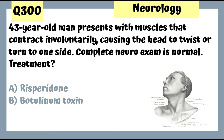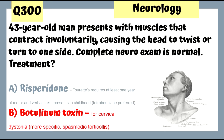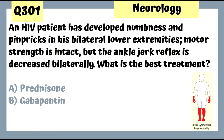Question 343: A 43-year-old man has muscles that contract involuntarily causing the head to twist or turn to one side — complete neuroexam is normal. This is cervical dystonia (spasmodic torticollis); treatment is botulinum toxin to relax the muscles.